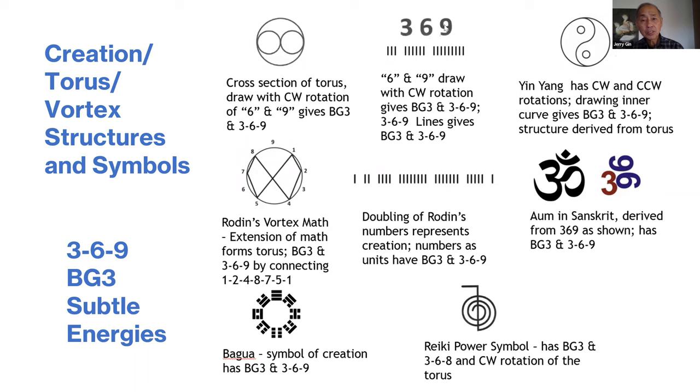Even the numbers themselves, if they're written in this particular order—the six with clockwise motion and the nine with clockwise motion—you get the BG3 and 369 energies. The universe looks not at Arabic numerals but at units. If you write lines or dots—three, six, nine—in that order, you get the BG3 and 369 energies.